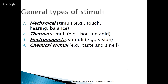General types of stimuli: we have mechanical stimuli, which includes touch, hearing, and balance. We have thermal stimuli, for example hot and cold. Electromagnetic stimuli, which is what vision is. And chemical stimuli, which is taste and smell. So: mechanical, thermal, electromagnetic, and chemical.